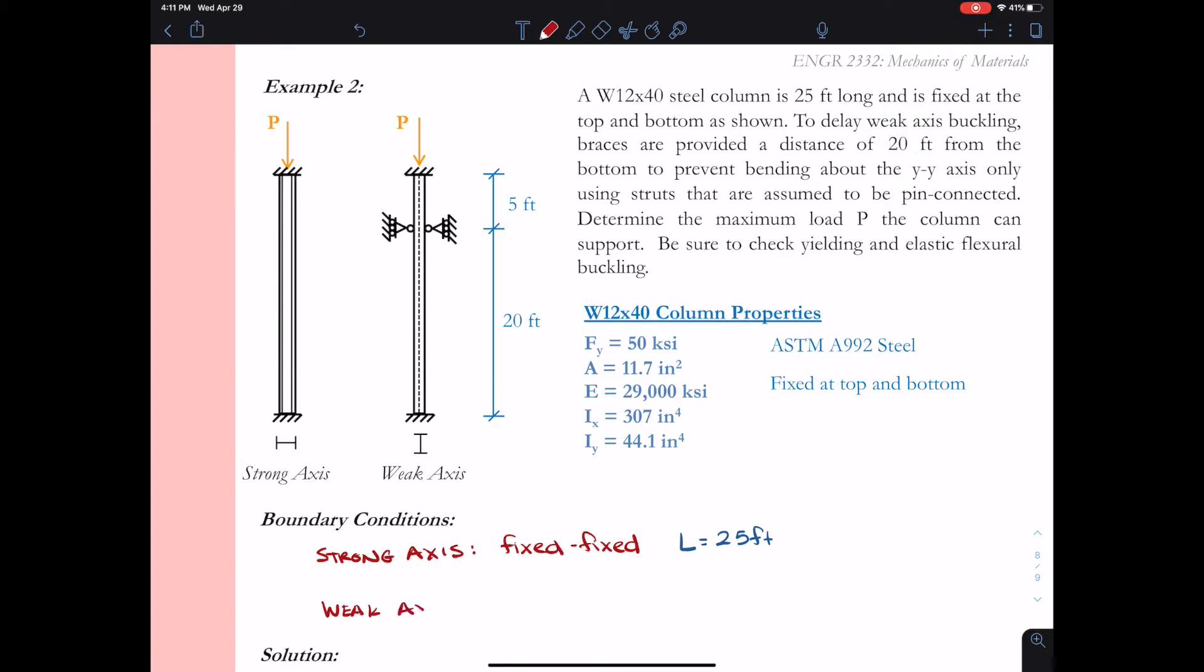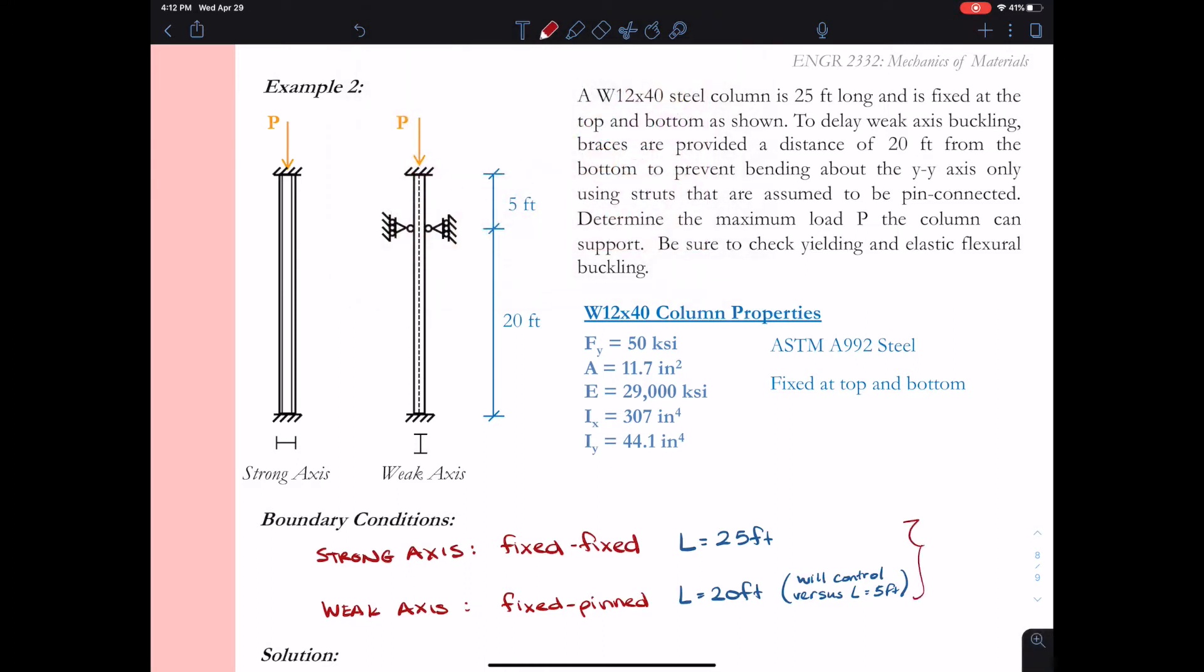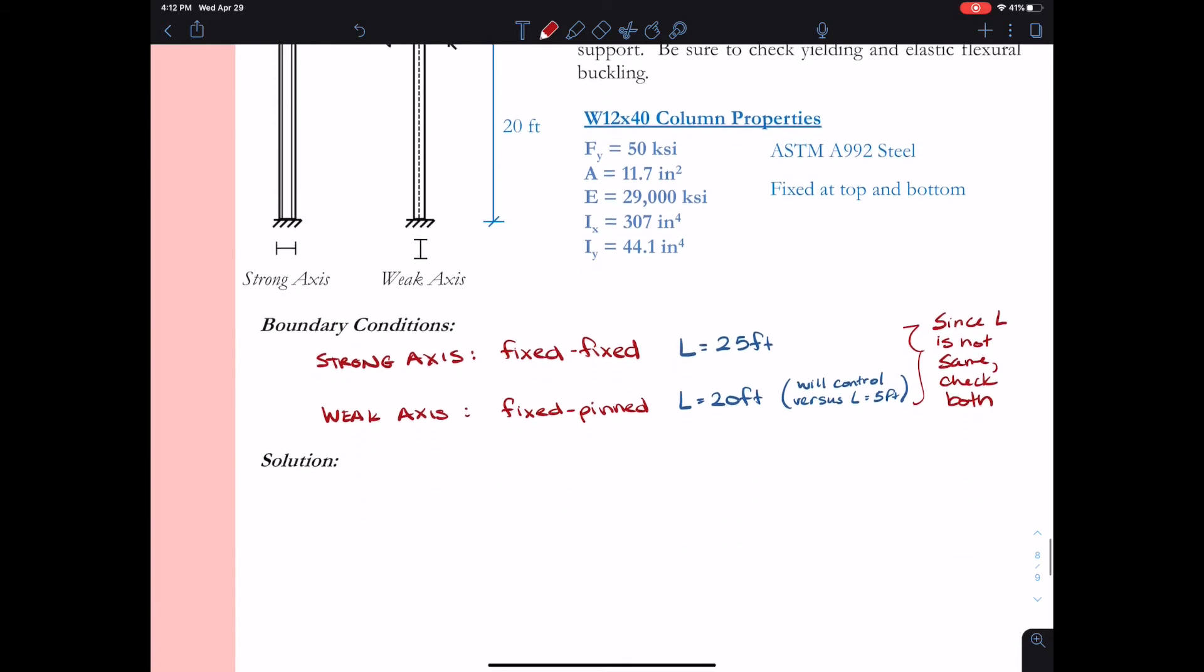Now let's look at the weak axis mode of failure. For weak axis buckling, we've supplied a brace part way up. That's going to result in a fixed pin condition. So this is going to change our effective length factor, K. We also have different lengths, so we have a length of 20 feet here. Now we could also check the length of 5 feet, but because the 20 foot is longer, the weak axis buckling strength over the 20 feet will be smaller than it is over the 5 feet. So I'm just going to check the 20 foot. Now since the lengths are different for strong and weak axis buckling, and because K, the effective length factor, is different, I want to check both of these as possible failure modes in this particular example.